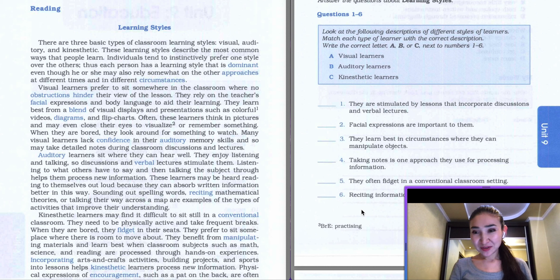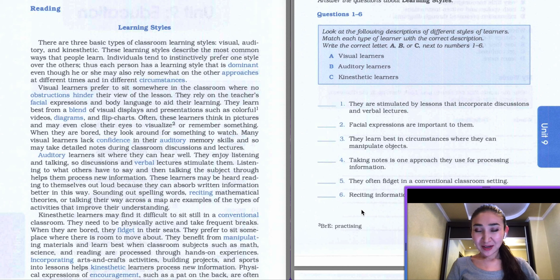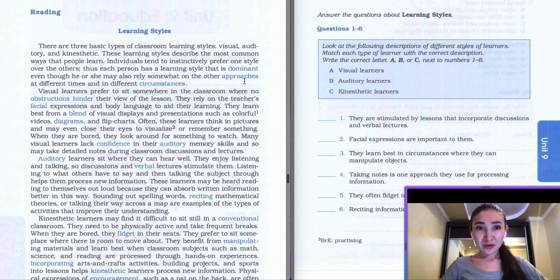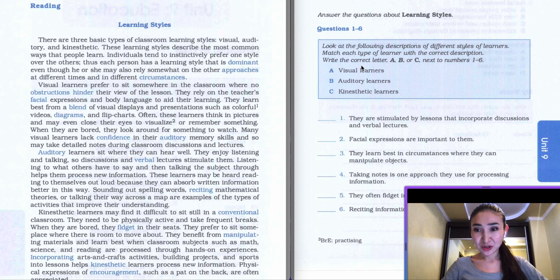Hello guys, so today we're going to proceed with Barron's Essential Words for IELTS reading trainings. I decided to film myself as well in order to make some interconnection between us and to make these videos easier. So today we're going to proceed with Barron's Essential Words for IELTS, Unit 9, Text 1. On the left-hand side we have a text, on the right-hand side we have the task. The text is called 'Learning Styles' and the task is to answer questions 1 to 6. Look at the following descriptions of different styles of learners, match each type of learner with a correct description, write the correct letter A, B, or C next to the numbers 1 to 6.